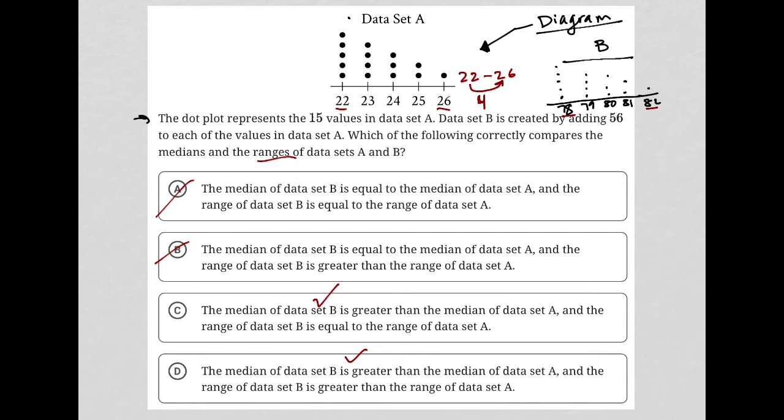There are four data points between 22 and 26, and the same thing happens between 78 and 82. Although our range has different starting and ending points, it's still a distance of four. Choice C tells us that the range of data set B equals the range of data set A, which is the correct answer.